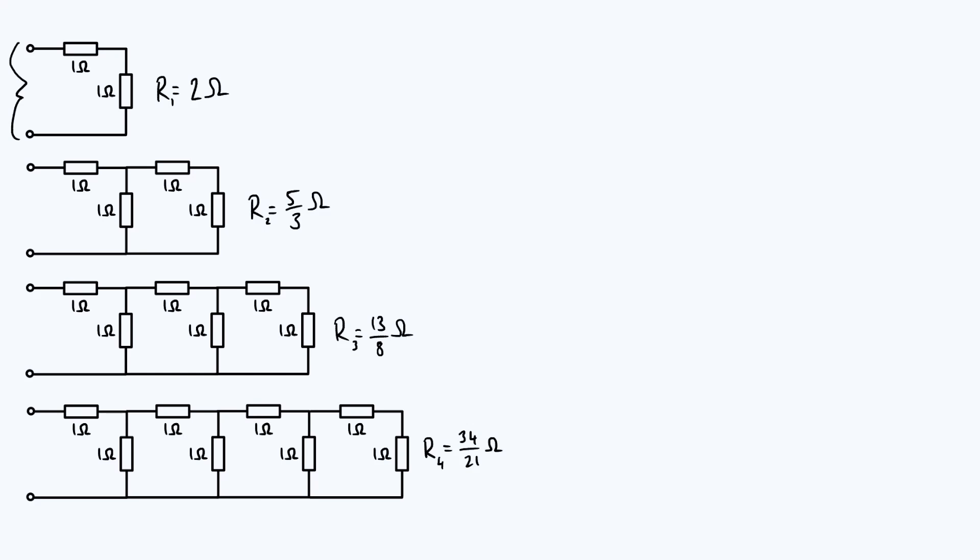Now it's fairly straightforward to calculate effective resistances for each of these networks, just using the fact that resistances in series add up, while resistances in parallel, you have to add their reciprocals, and we know that all of the resistors individually have one ohm resistances.